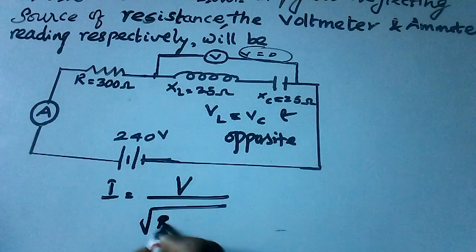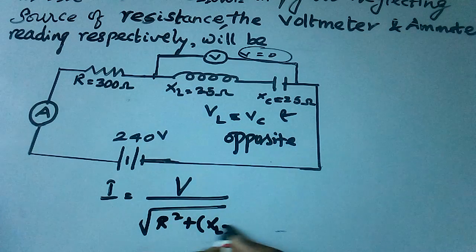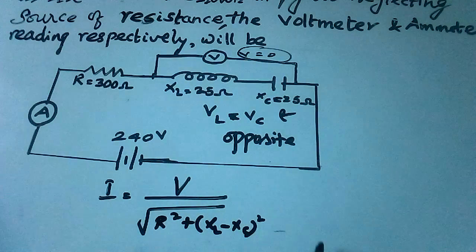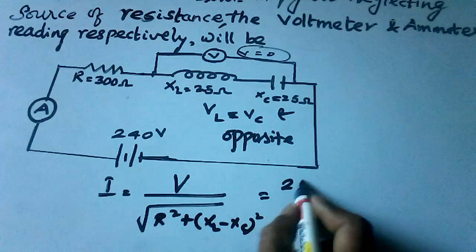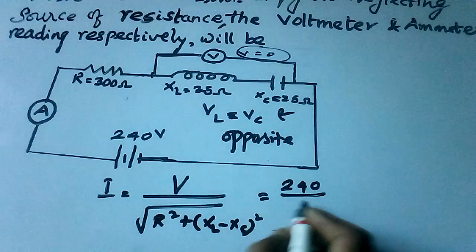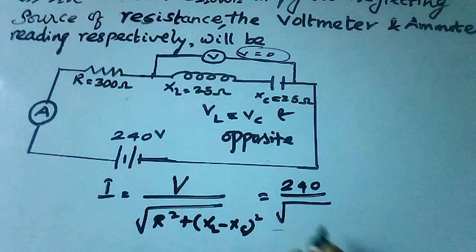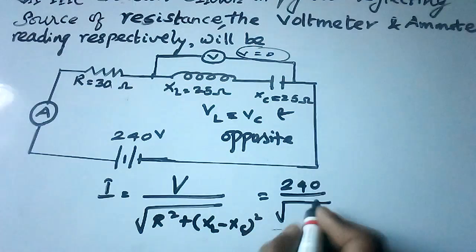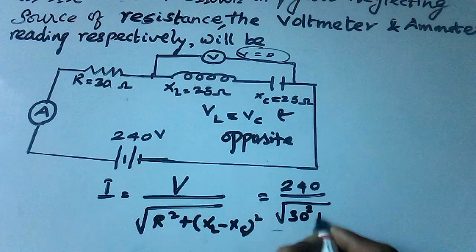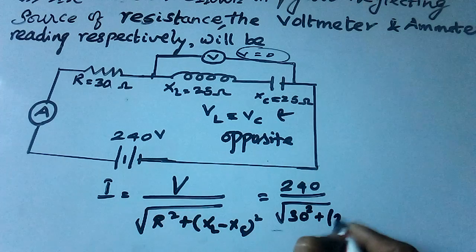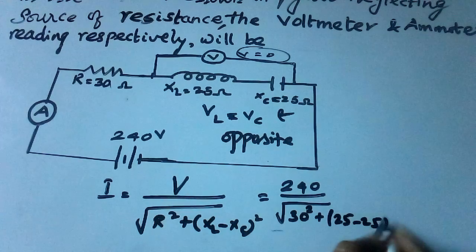Given in the circuit, 240 is the value of V and R is 30 ohm. That is 30 squared plus (25 minus 25) the whole squared.